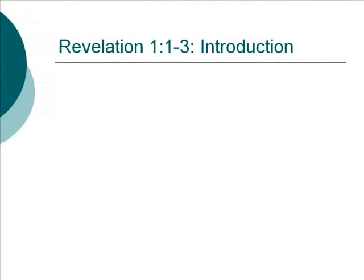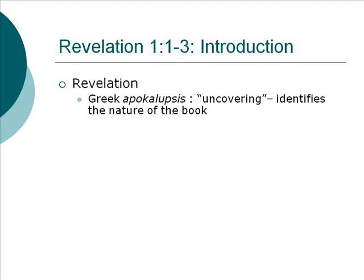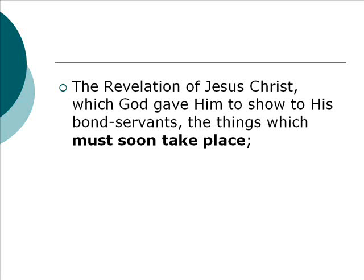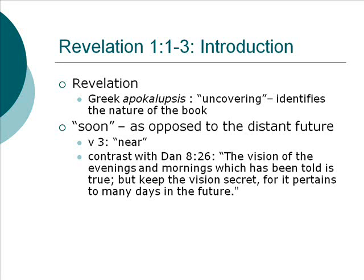It begins in verse 1: 'the revelation of Jesus Christ.' The Greek word here is apokalupsis, which literally means an uncovering. John begins by saying there is something that is being uncovered or revealed — something that was not known that is now going to be shown to you. It is the revelation of Jesus Christ, that is, that comes from Jesus Christ, which God gave him to show his bondservants the things which must soon take place. And immediately we come to one of those places where people ask: what does 'soon' mean?